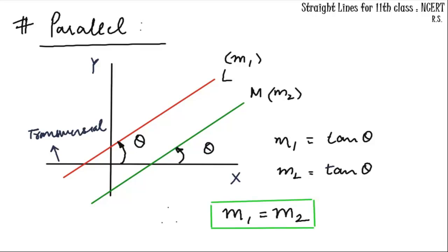Let's start with parallelism of two lines. If two lines l and m are given with their respective slopes m1 and m2, and the lines are parallel, a third line cutting or intersecting both is known as a transversal. These two angles will be corresponding angles, so they have to be equal. The slope of line l is m1 = tan θ, and slope of line m is m2 = tan θ, so we get m1 = m2. This is the basic condition for any two parallel lines — their slopes are always equal.